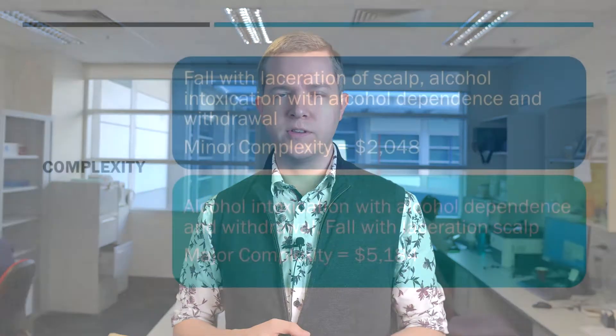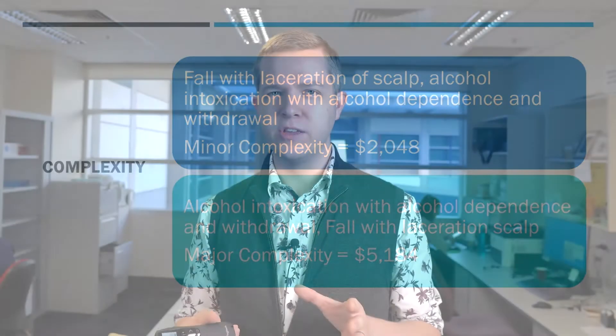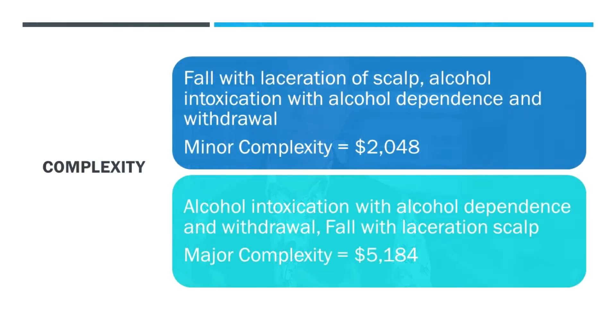Here's an example where someone has had a fall and a laceration of their scalp, and there was some mention of alcohol use. If it's not appropriately documented, you're going to get a minor complexity of about two thousand dollars. But if we document that it's really the alcohol intoxication linked with alcohol dependence and withdrawal that is the actual triggering event for the fall — and the complication of the fall being the laceration of the scalp — that clear documentation gives a major complexity and takes the activity-based funding for that admission up to just over five thousand dollars. You can see that makes a big difference.